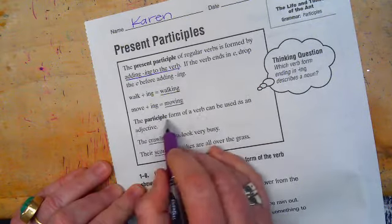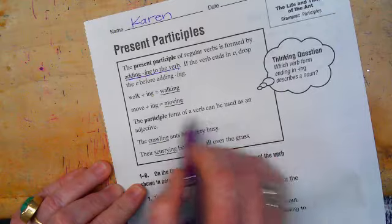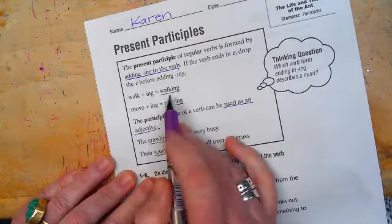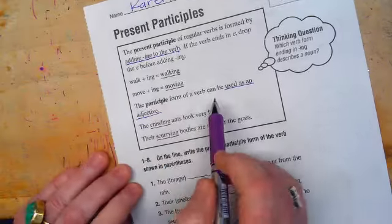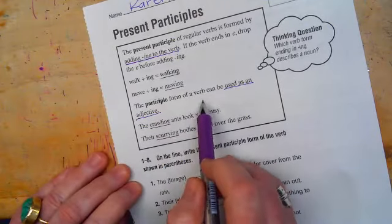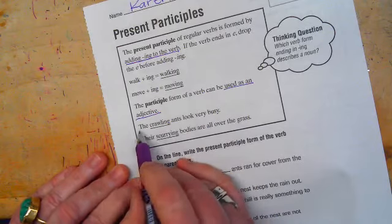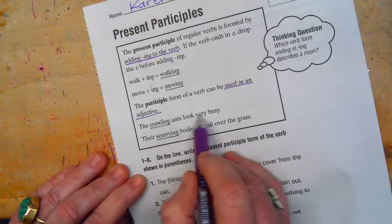The participle form of a verb can be used as an adjective. So you could say that it's a verb, but it's also an adjective. So for example, the crawling ants look very busy.